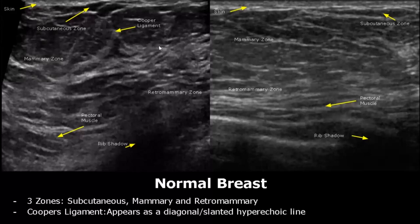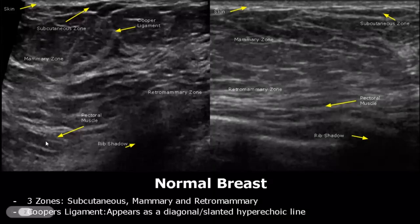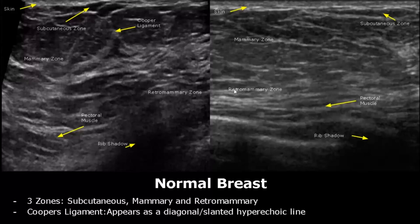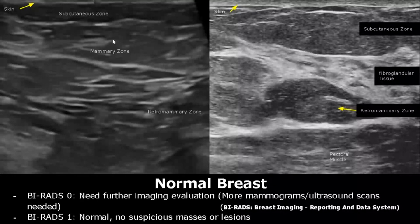This hyperechoic area is the fibroglandular tissue. These hyperechoic slanted or diagonal lines are Cooper's ligaments. This striated structure is the pectoral muscle. The retromammary zone lies between the pectoral muscle and the mammary zone; it usually appears smaller because it is compressed due to probe pressure. And this shadowing is due to the rib. Usually the retromammary zone is below the fibroglandular tissue, but that is not always the case.